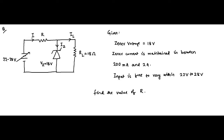The range of variation of the input voltage is from 22 to 28 volts. The other parameters associated with the circuit are also given. The Zener breakdown voltage is 18 volts. The Zener current is maintained between 200 milliampere and 2 ampere — the minimum value is 200 milliampere and the maximum value is 2 ampere. We have to find the value of R.